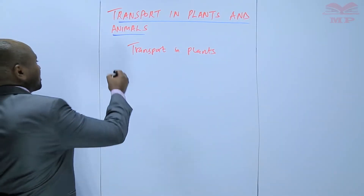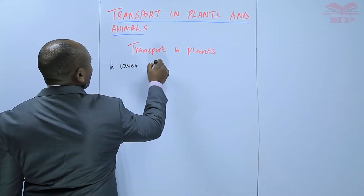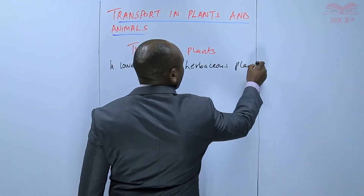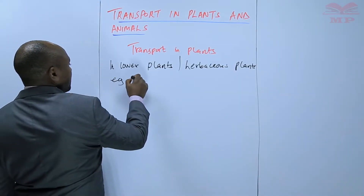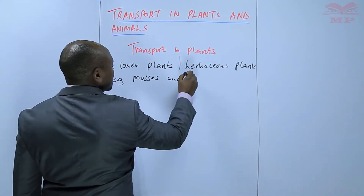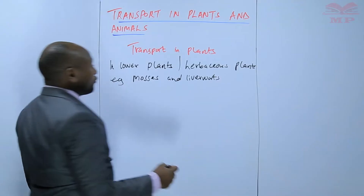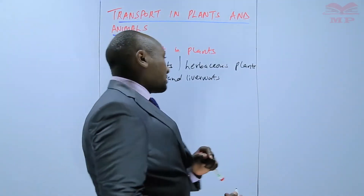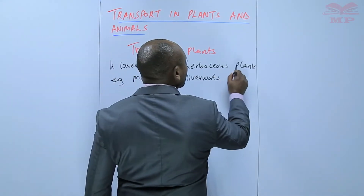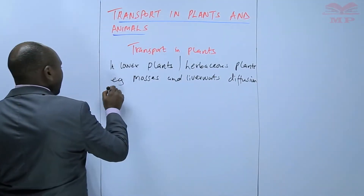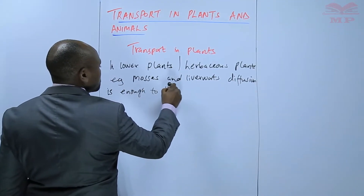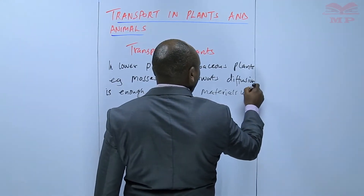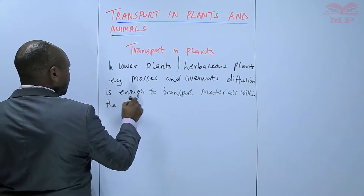In lower plants, which are also known as herbaceous plants — for example, we have things like the mosses and the liverworts — because they are very, very small, diffusion is enough to transport materials within the entire plant.